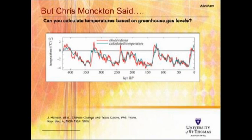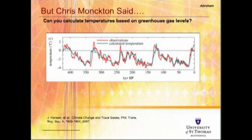What Abraham says is that this graph reinforces how tightly greenhouse gas levels and temperatures are linked. The red line shows observed temperatures over the last 450,000 years, and the blue line shows temperatures calculated by James Hansen using a computer model accounting for changes in temperature primarily due to greenhouse gases — ignoring all other forces on climate. The blue and red are in great agreement, which Abraham calls extremely strong evidence that CO2 and the greenhouse effect is the biggest contributor to past climate change.